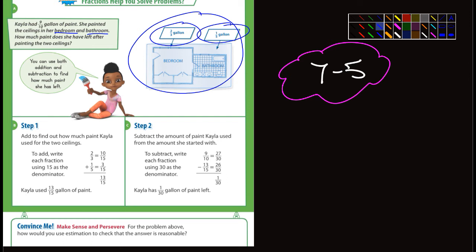So they do that in step one and they end up with 13 over 15 is the answer. But we're not done yet because she had nine-tenths of a gallon left so they got to subtract 13 fifteenths from nine-tenths of a gallon. What do they come up with?